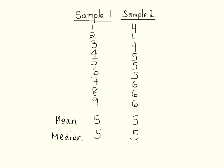Here's an example of two different data sets that have the same mean and the same median, so the central tendency of these two sets of data is exactly the same. However, if you look at the numbers that make up the sets of data, you see that they're very different. Sample one has a lot more different values than does sample two. The mean and median are, in some sense, less representative in sample one because the observations are much farther from the central tendency.